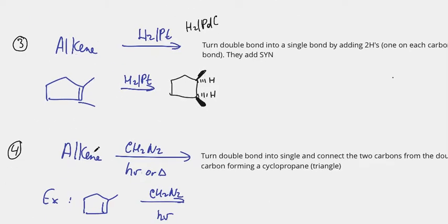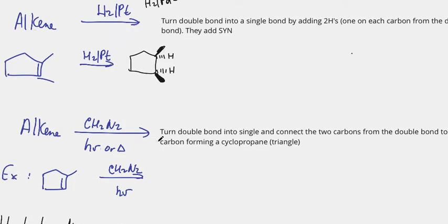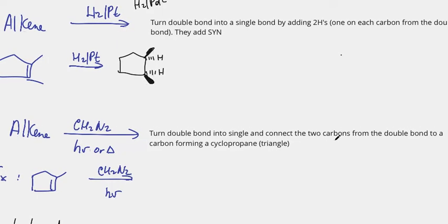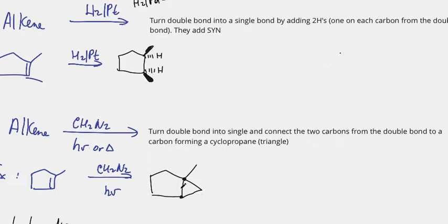The next reaction is alkene with CH2N2. All we do is turn the double bond into a single bond and connect the two carbons from the double bond to a new carbon, forming a cyclopropane — basically you are making a triangle. These are the two carbons that had the double bond, and I attach them to another carbon to form a cyclopropane. I call it the triangle — it's not officially called that, but it helps you memorize the reaction.